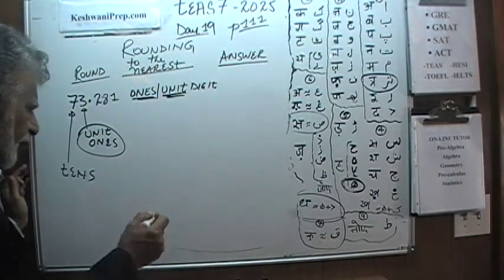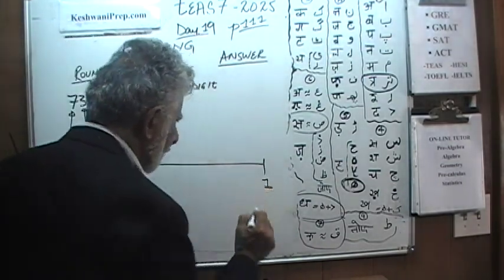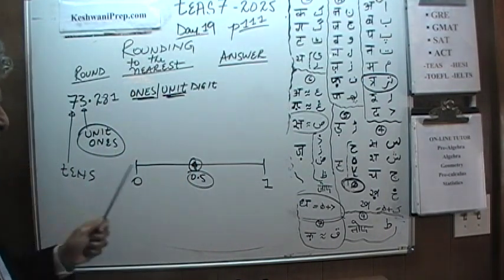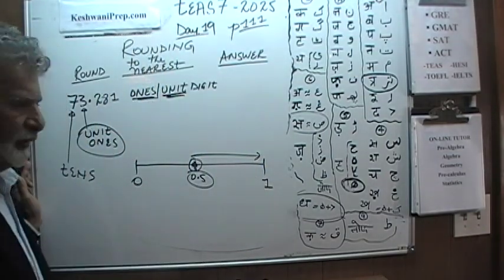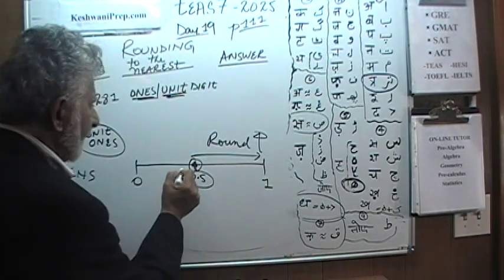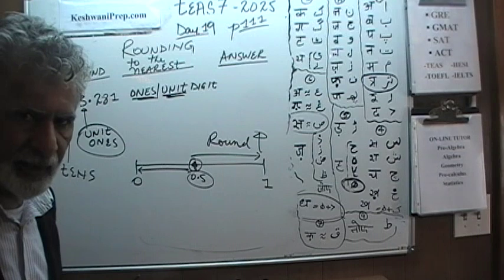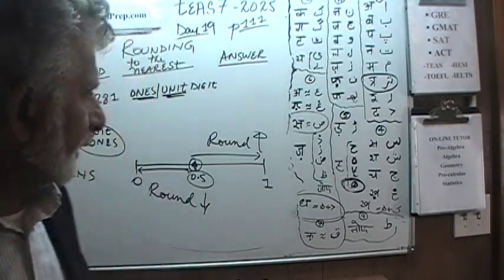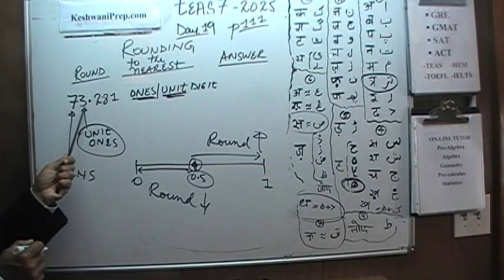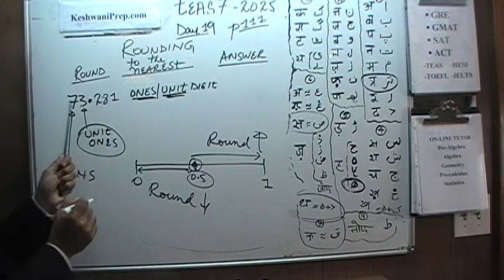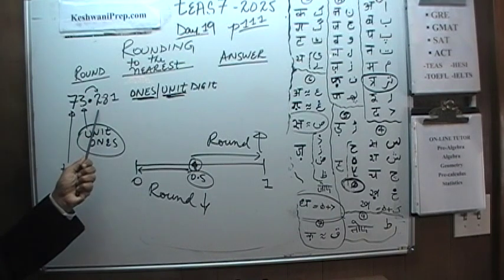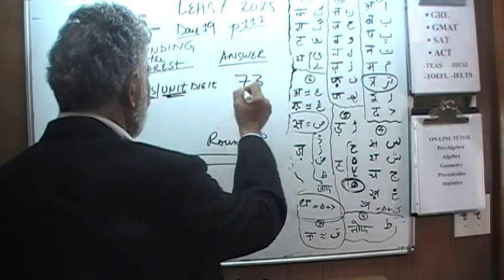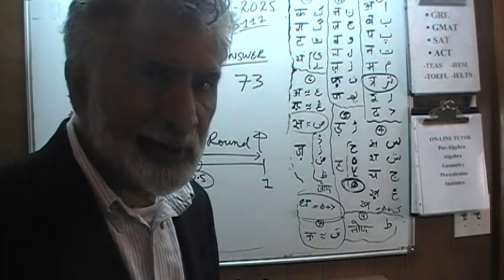The rule is very straightforward. You draw a line in your mind from 0 to 1, and right in the middle you have 0.5. If anything ends in 0.5 or above, we round up. If it is below 0.5 — even 0.499999 — we round it down. So for 73.281, we look at the digit after the ones digit: it is 2, which is not 5 or more, so 73.281 rounded to the nearest ones digit becomes 73.